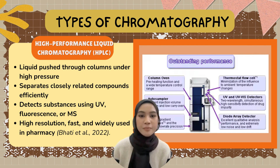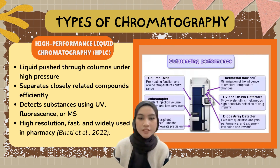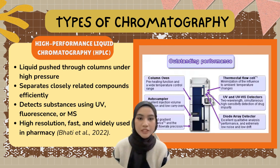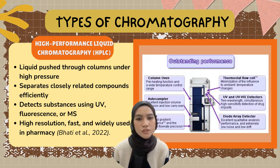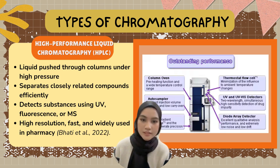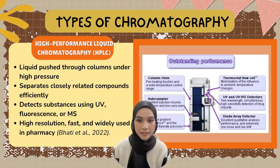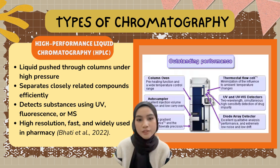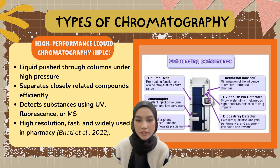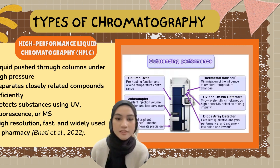Lastly, high-performance liquid chromatography, HPLC. HPLC works by pushing a liquid through columns under high pressure. This allows it to separate compounds that are very closely related with high efficiency. It can detect substances using UV light, fluorescence, or mass spectrometry. It's widely used in pharmaceutical labs because it gives high-resolution results.